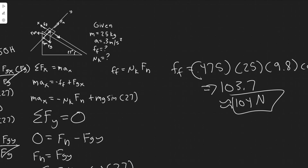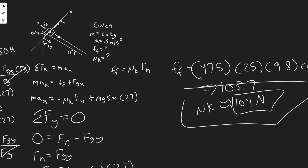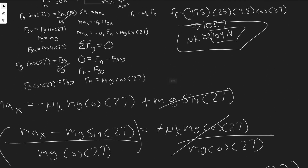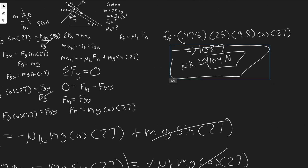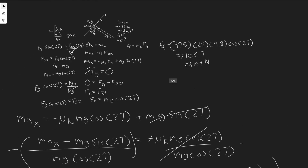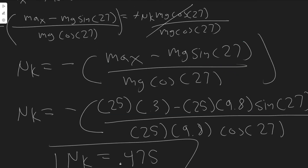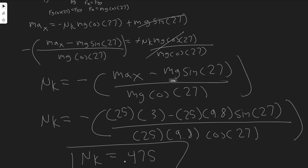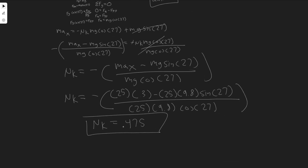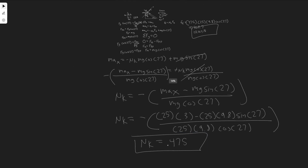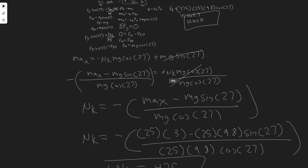So our final answers are: the force of friction is approximately 104 newtons (impeding the motion), and the coefficient of kinetic friction mu sub k is 0.475. Hopefully you found this walkthrough useful.